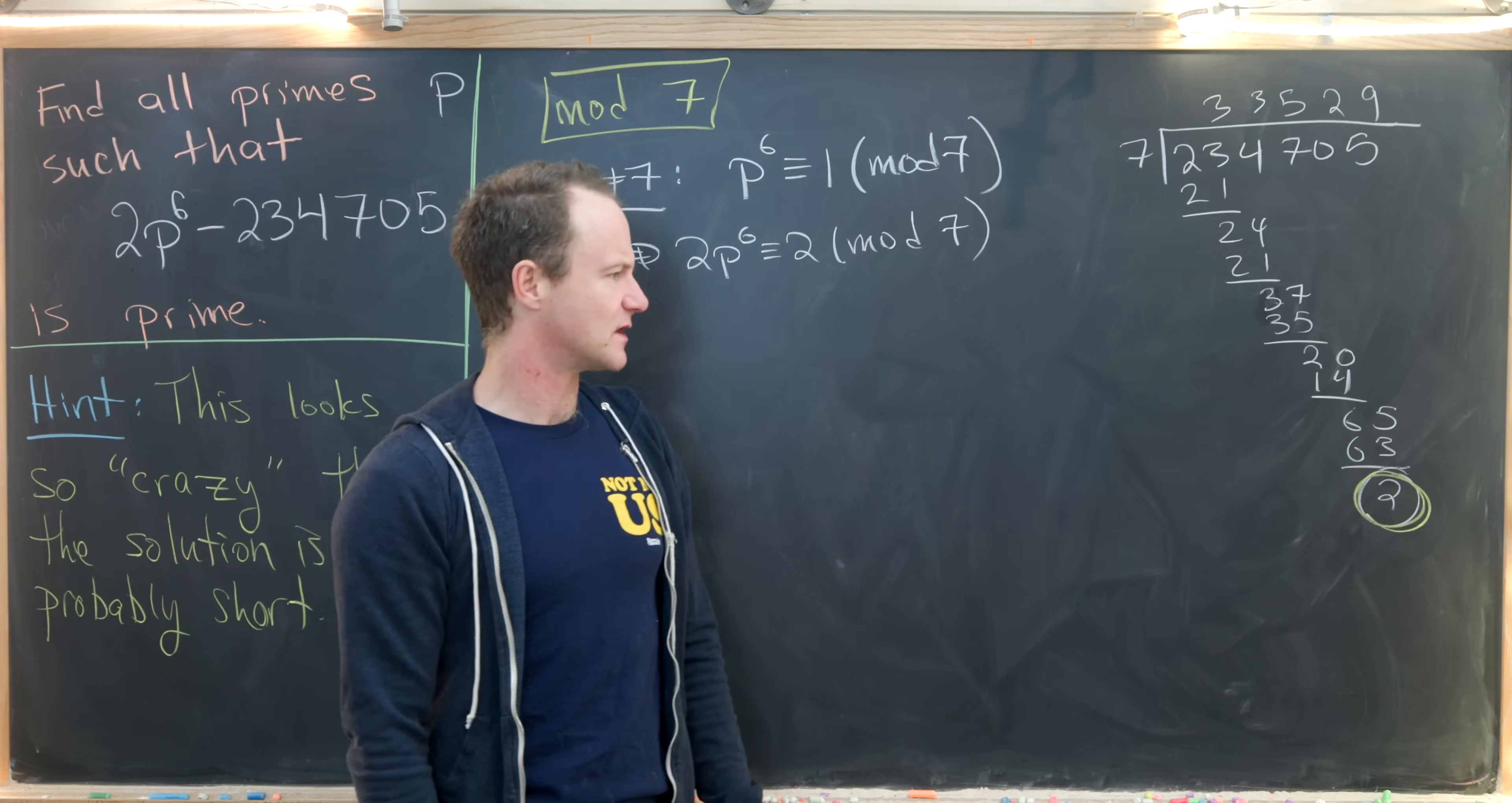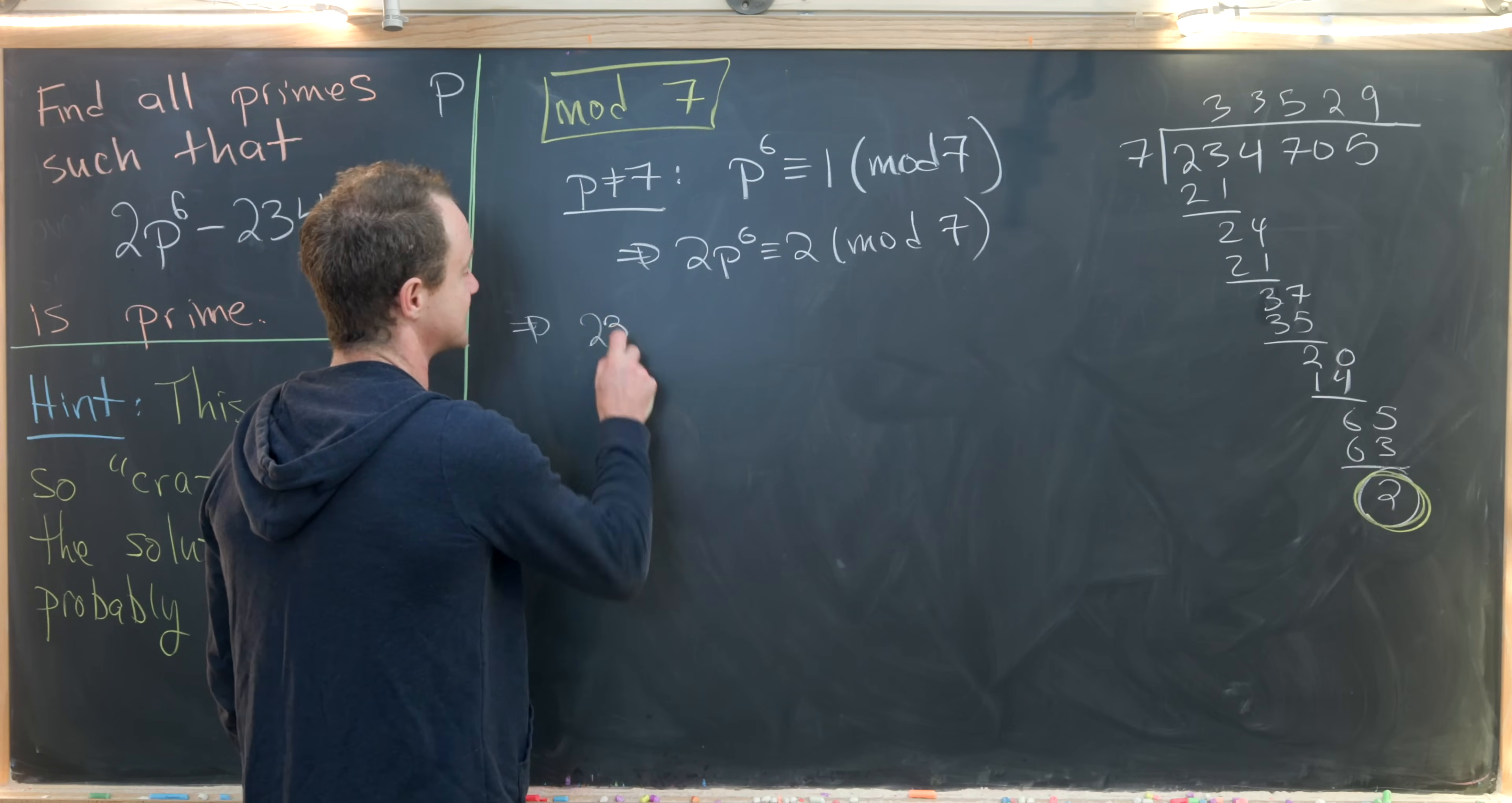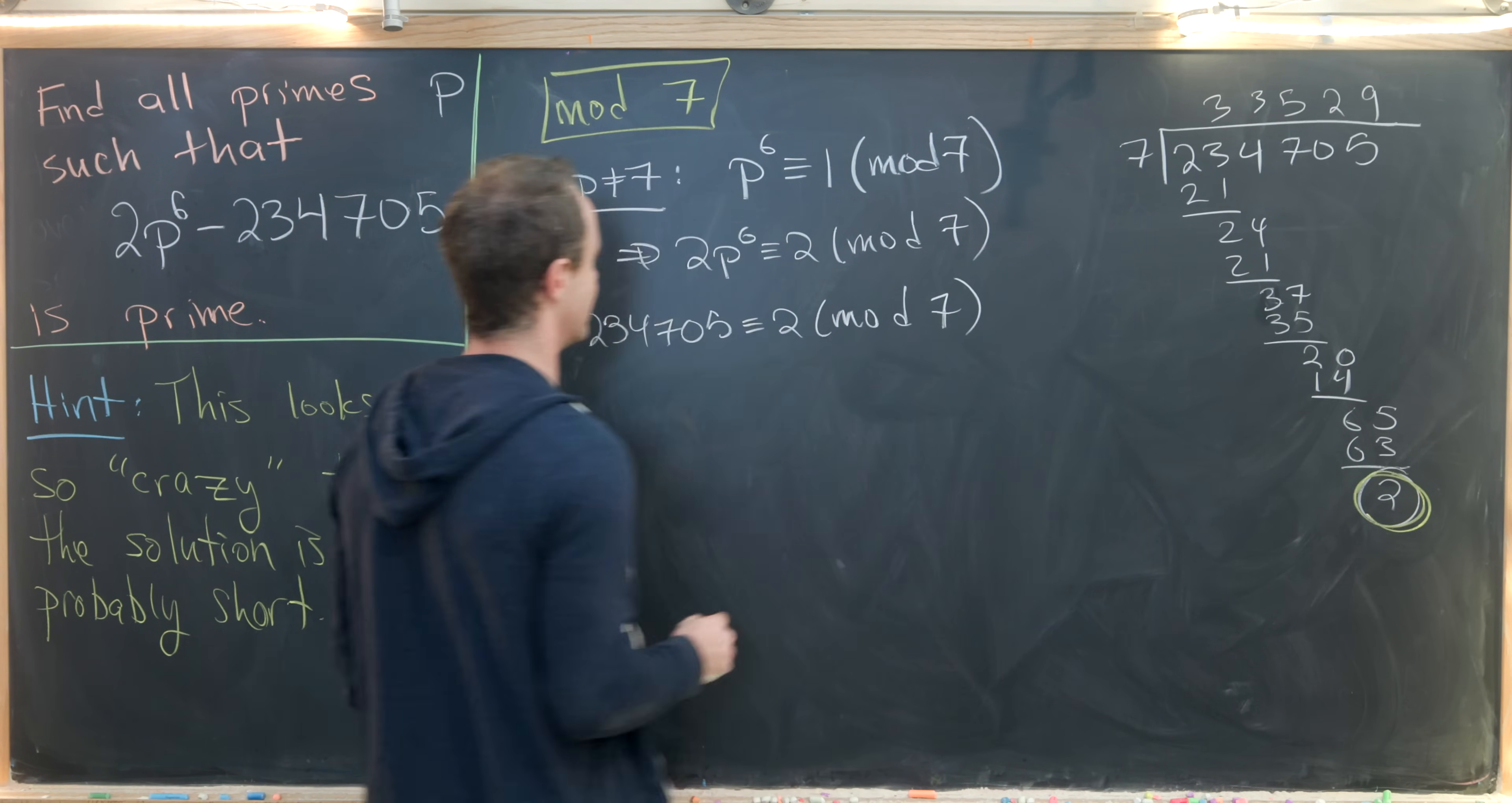So after doing a lot of grade school math, we see that in the end we have a remainder of 2. But the fact that we have a remainder of 2 means that this number, 234,705, is indeed also congruent to 2 mod 7.